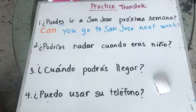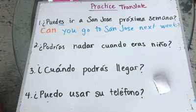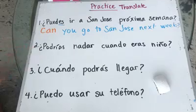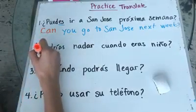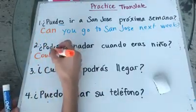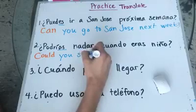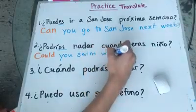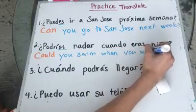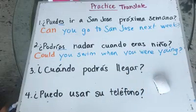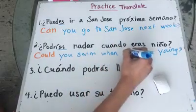Number two. ¿Podrías nadar cuando eras niño o niña? This sentence is in the past — pasado. So we are going to use could, en la forma pasada. Could, subject — you — swim, nadar, when you were young, or when you were a child. Could you swim when you were young?